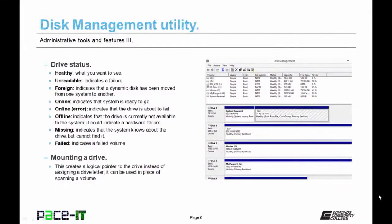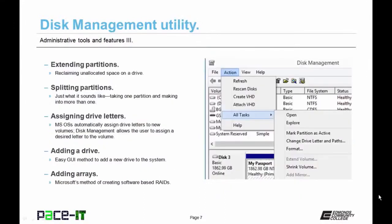Mounting a drive creates a logical pointer to a drive instead of assigning a drive letter, and can be used in place of spanning a volume. Extending partitions is reclaiming unallocated space on a drive. Splitting partitions takes one partition and makes it into more than one. Microsoft operating systems automatically assign drive letters to new volumes, but disk management allows the user to assign a desired drive letter instead. The disk management tool also makes adding an array easy — this is Microsoft's method of implementing software-based RAID.